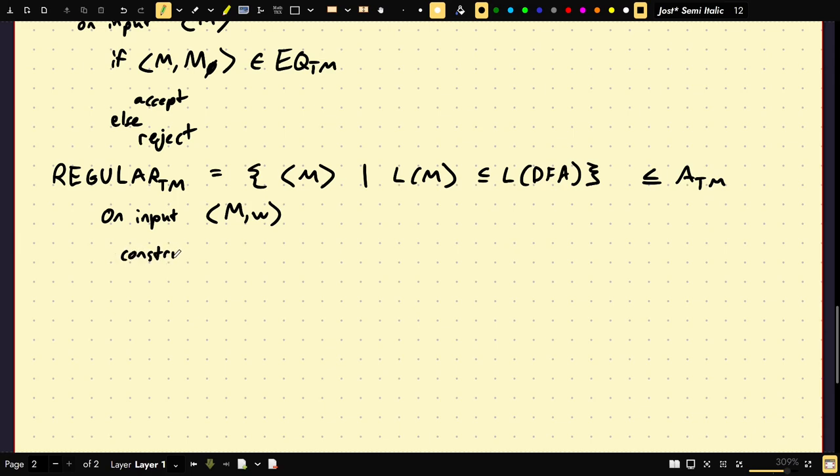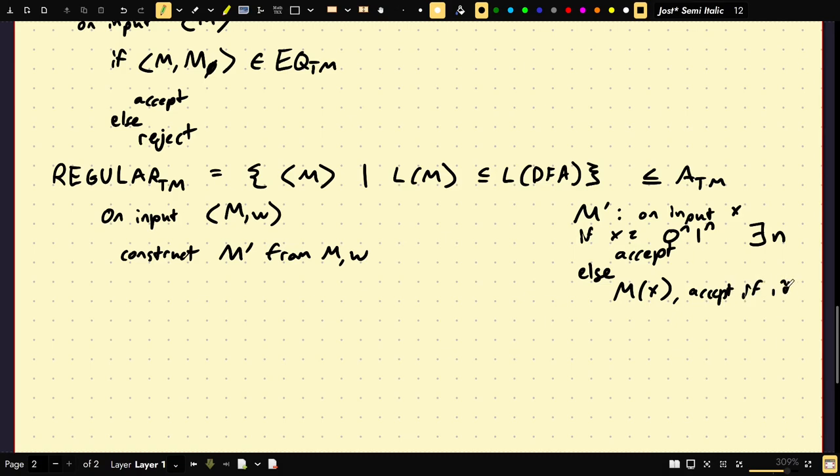construct M prime from M and W. And I'm going to write what M prime is over here. M prime is going to be on input let's say X. If X equals 0 to the N 1 to the N for some N then we accept. I'm basically choosing a non-regular language here for you if you notice. Else run M on X and accept if it accepts.